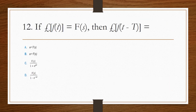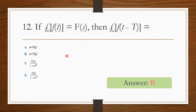If the Laplace transform of f(t) is F(s), then the Laplace transform of f(t − T) — this is the time shifting property, so option B is the right answer: e^(−sT) · F(s).